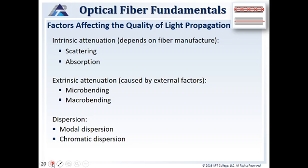We also have intrinsic and extrinsic attenuation factors. An intrinsic attenuation factor is dependent on the manufacturer or the way the fiber was constructed — these are scattering and absorption. Extrinsic attenuation is something done to the fiber by the installer or customer. Extrinsic factors are micro-bends and macro-bends. We also have dispersion — modal and chromatic dispersion — which are all attenuation factors.